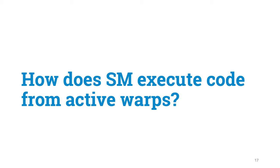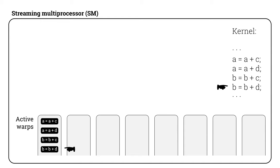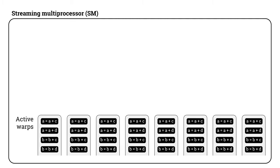So now each SM has some active blocks. We have allocated space for the registers of all active threads, and we have some number of active warps ready for execution. To keep things simple, let's focus on arithmetic operations — assume the kernel is just doing some basic floating-point operations like floating-point additions using data kept in registers. Say the next instructions are these, and assume A, B, C, and D are single precision floating-point numbers kept in registers. We want to first increment A, then increment A again, then increment B, etc. Let's also assume there are eight active warps.